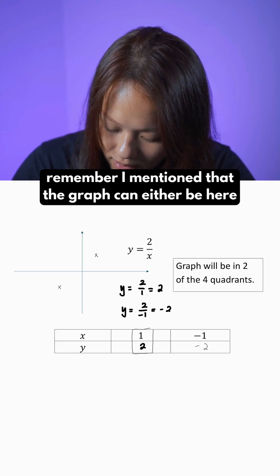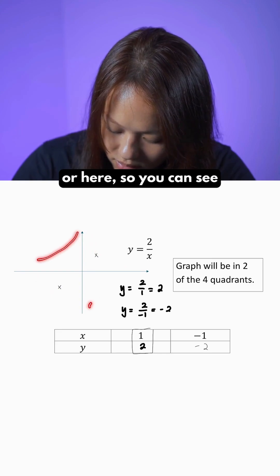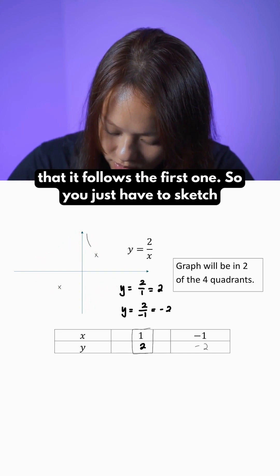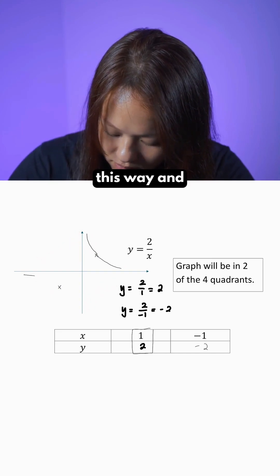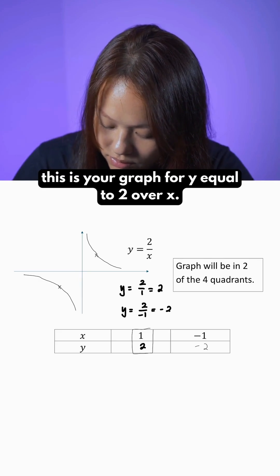So if you remember, I mentioned that the graph can either be here or here. You can see that it follows the first one. So you just have to sketch this way. And this is your graph for y equal to 2 over x.